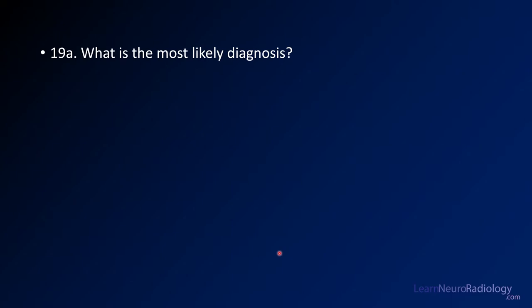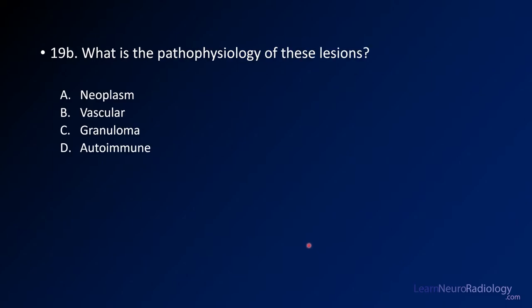There's not a broad differential for this — you can usually narrow it down to one thing. Question two is: what is the pathophysiology of this lesion? Is it a neoplasm, is it vascular, is it granulomatous disease, or is it autoimmune?